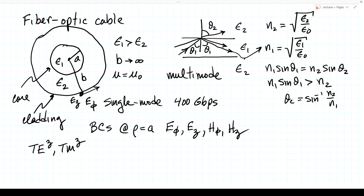In this case, because we have four boundary condition equations — continuity of E-phi, E-z, H-phi, and H-z — we don't get enough unknowns from just TEz or TMz alone. To describe single-mode operation properly, we need so-called hybrid modes that combine TEz and TMz components. This gives more degrees of freedom — more unknowns — to match all the boundary conditions.